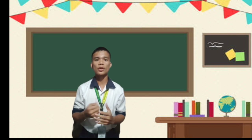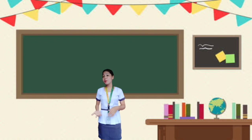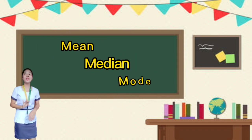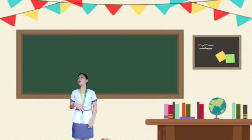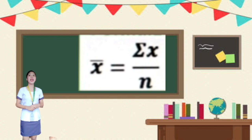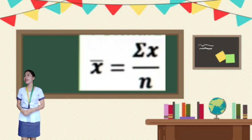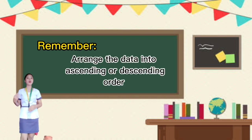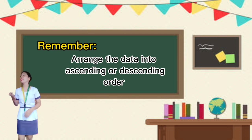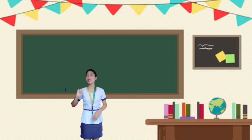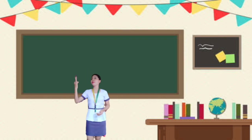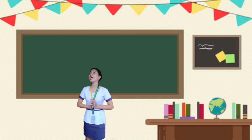May I call Ms. Crispy to give instructions for our activity. Before the activity, let's recap: the three types of measures of central tendency are mean, median, and mode. The formula for mean is x̄ = Σx / n. For finding the median and mode, arrange the data in ascending or descending order. The five types of mode are: no mode, unimodal, bimodal, trimodal, and multimodal.